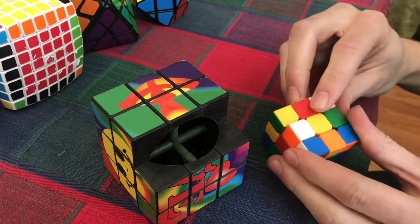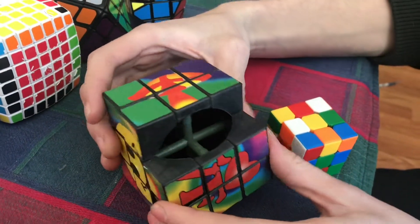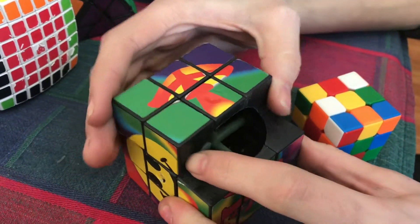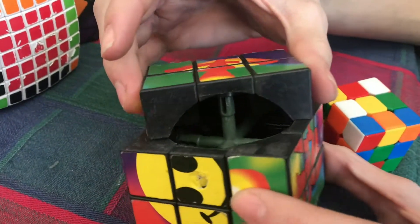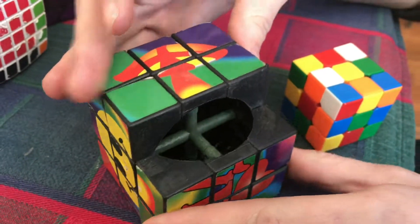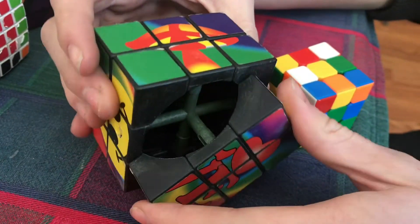Rubik's Cubes are made in a lot of different ways. This one here you can see is pulled apart and you can see that the pieces move along rails to rotate.